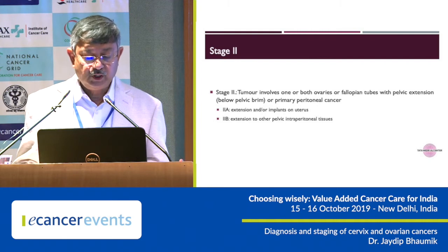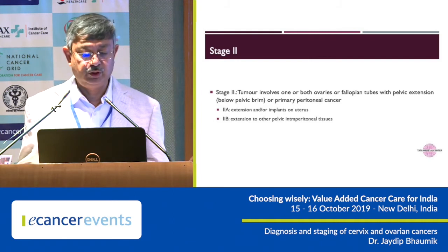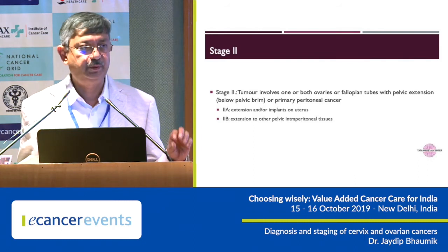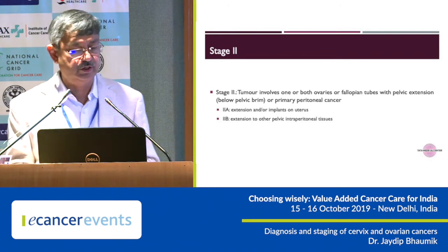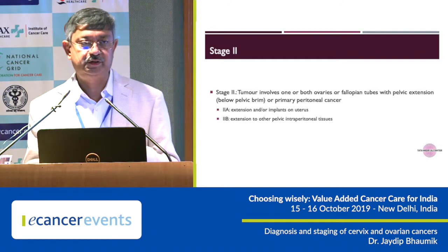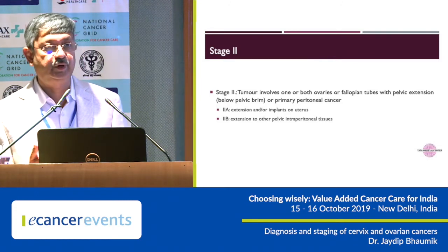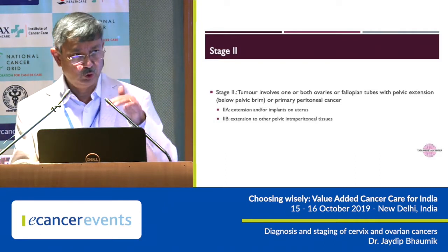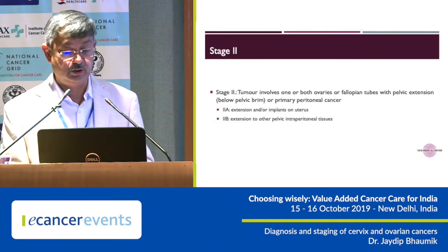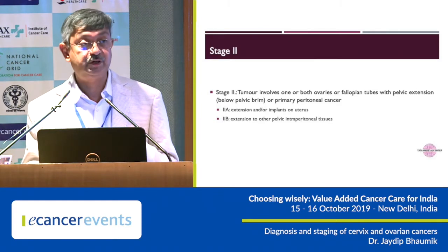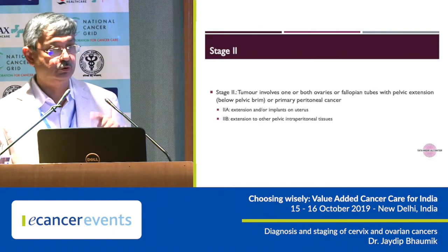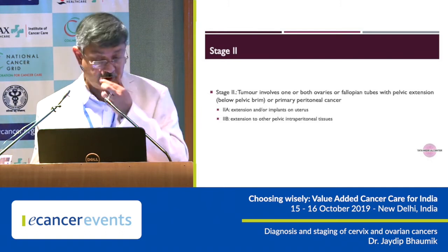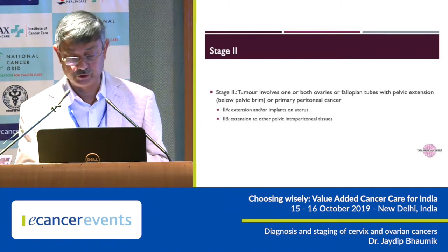Stage 2 is disease confined to the pelvis only. If it implants on the uterus, we call it Stage 2A. If the disease is on the peritoneal surface of the bladder or the rectum, or sometimes a loop of sigmoid colon that has come below the pelvic brim, then you call it Stage 2B. Mural invasion of these organs actually constitutes Stage 4, so be very careful when staging. Stage 2B is only peritoneal surface deposit.